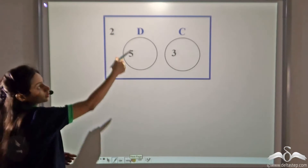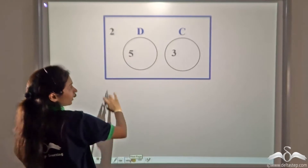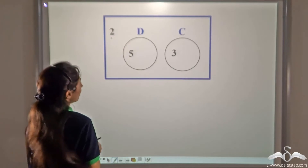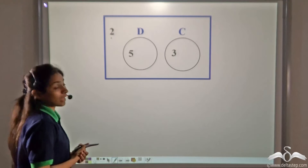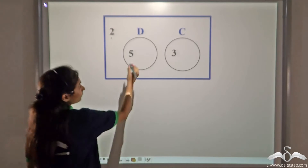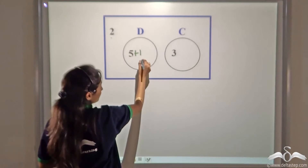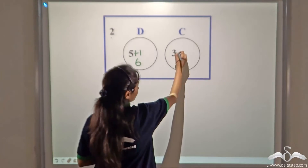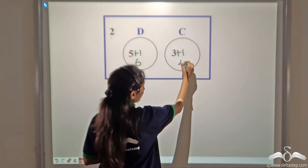On a Venn diagram, this group of friends has five who like dogs, three who like cats, and two who like none. Now suppose one friend joins your group who likes both dogs and cats. I can place him in the dogs circle — giving six — and also in the cats circle, giving four.